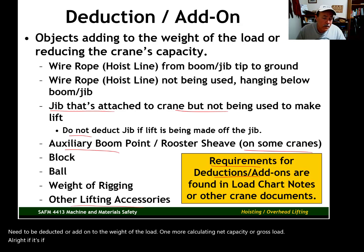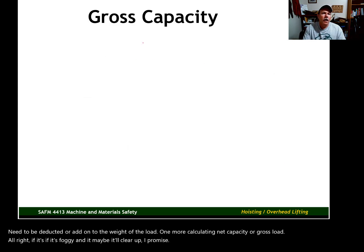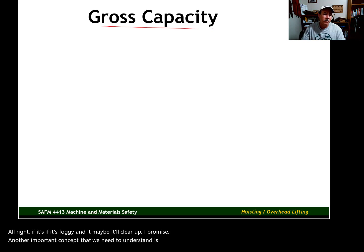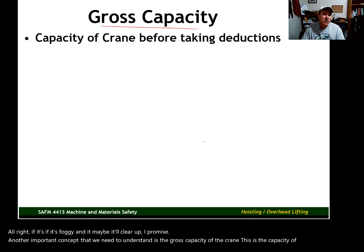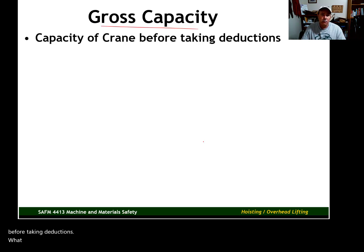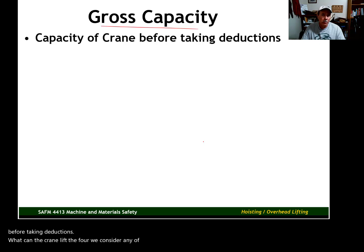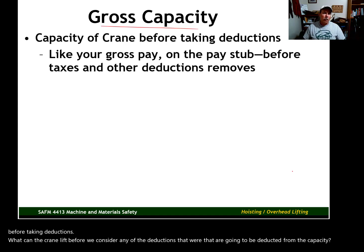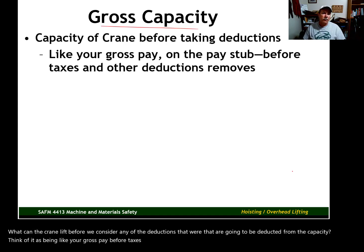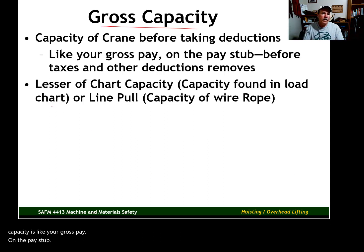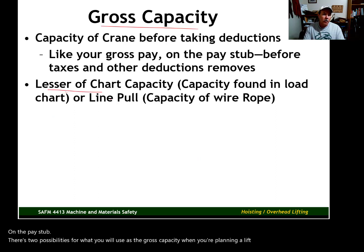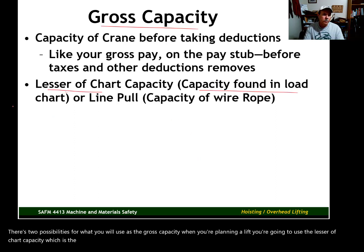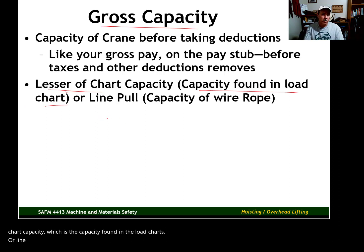Another important concept is the gross capacity of the crane — the capacity of the crane before taking deductions. Think of it like your gross pay before taxes and insurance are removed. There are two possibilities for what you use as gross capacity when planning a lift: you use the lesser of chart capacity (the capacity found in the load charts) or line pull (the capacity of the wire rope). You use whichever is lower — the lesser of the two.